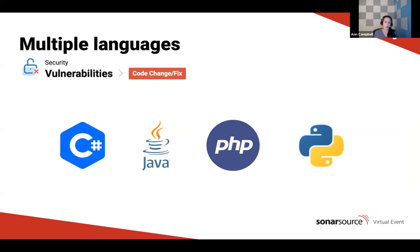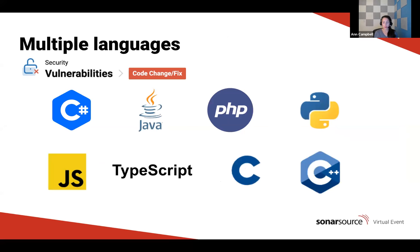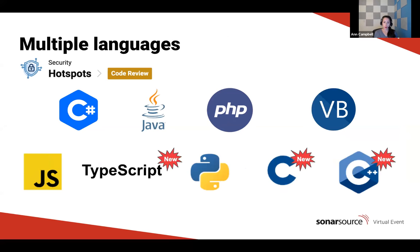We offer security vulnerabilities in four languages: C#, Java, PHP, and a recent addition — Python. By the end of the year, we're going to add JavaScript, TypeScript, C, and C++. For hotspots, we currently offer those in C#, Java, PHP, VB, JavaScript, and Python, with TypeScript, C, and C++ coming by the end of the year.